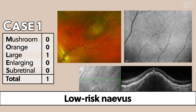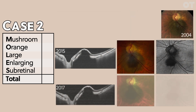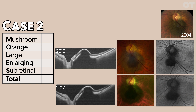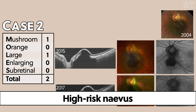This is a tumour we've been monitoring since 2004. On the OCT, it has an incipient mushroom shape — not obvious, but almost — so it gets a score of one for M. There's no orange pigment on autofluorescence or colour imaging. It is medium-large in size: three disc diameters in diameter and between one and two millimetres in thickness, so it scores one for L. There's definitely no evidence of enlargement in the photos, and no subretinal fluid on OCT or ophthalmoscopically. Total score is two — a high-risk nevus.